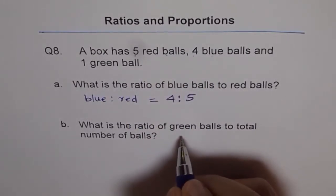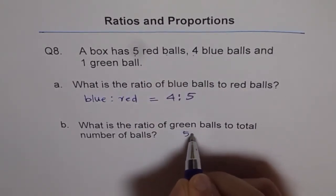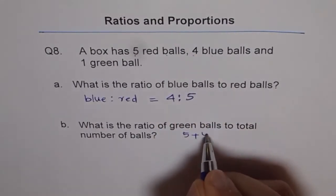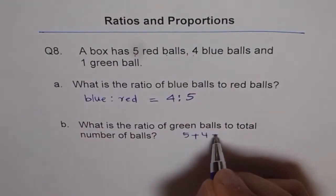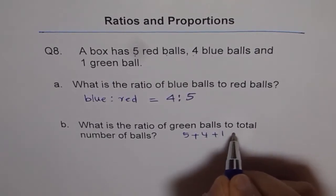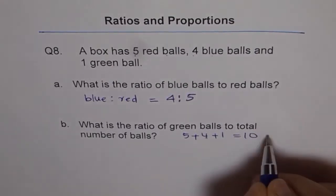5 red balls, so the total is 5 plus 4 blue balls and 1 green plus 1. 5 plus 4 is 9. 9 plus 1 is 10. So 10 is total.